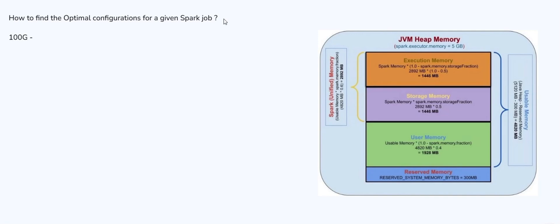For 100 GB of data, we were able to find out we need to use 800 cores and 400 GB of memory. So these configurations are what we were able to find to process the 100 GB of data. To optimize this, we need to understand a few things.